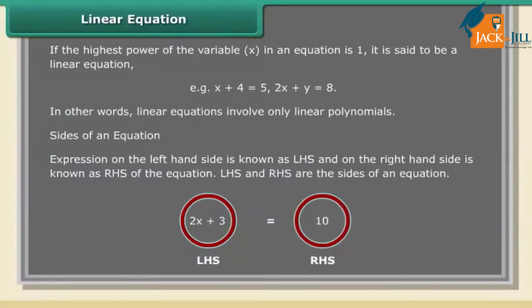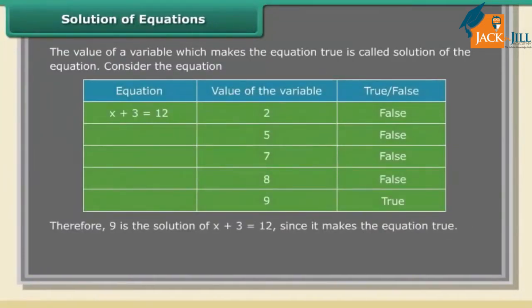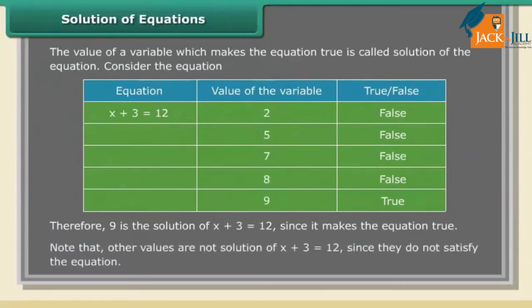LHS and RHS are the sides of an equation. Solution of equations: the value of a variable which makes the equation true is called the solution of the equation. For example, 9 is the solution of x + 3 = 12, since it makes the equation true. Other values are not solutions since they do not satisfy the equation.